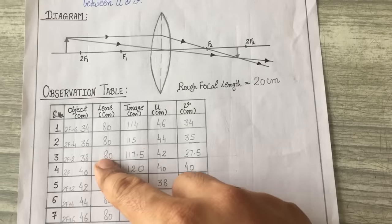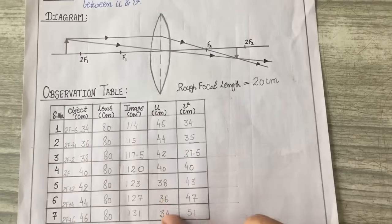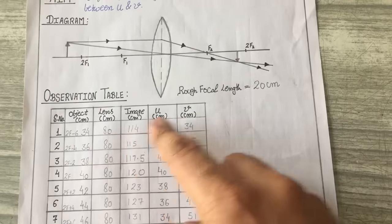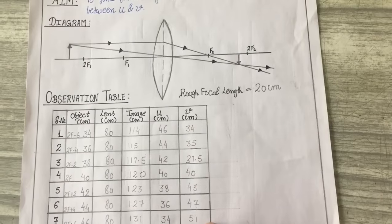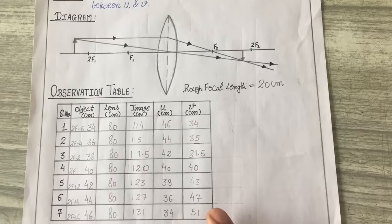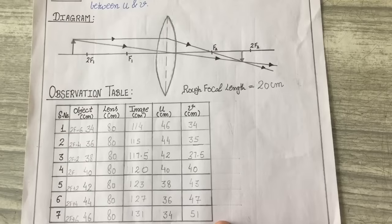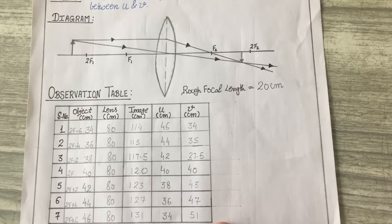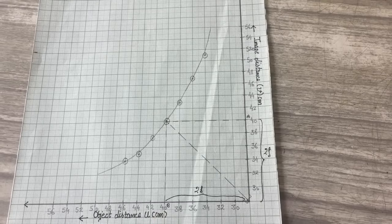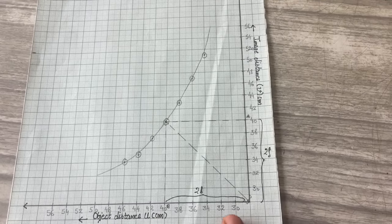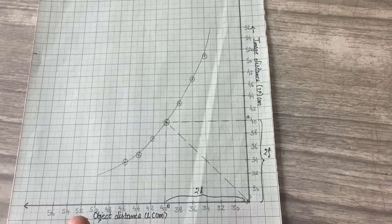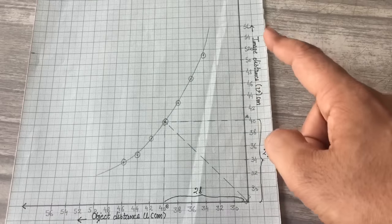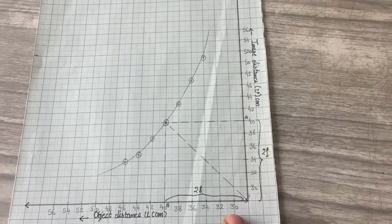The gap between the lens and the object is written in the u column as object distance, and the gap between the lens and the image is our image distance written under v. Now we need to plot a graph between u and v, and from that graph we will find the focal length. As per sign convention, object distance is negative, so we have plotted u on the negative x-axis and image distance on the positive y-axis.